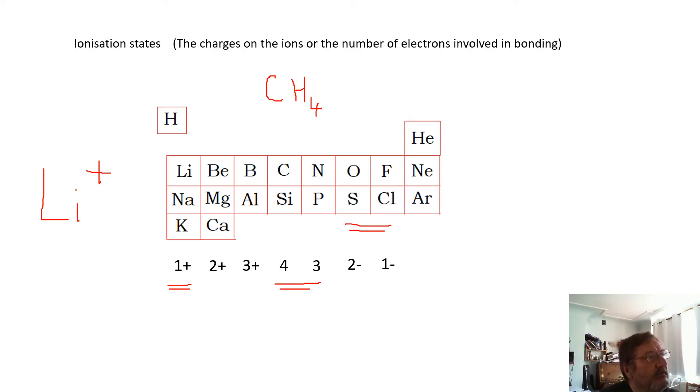If you know the ionization state, you can figure out the formula for the compound. For example, lithium oxide. Lithium is Li+, oxygen is 2-. So what will the formula for lithium oxide be? Well, you're going to want two lithiums for every oxygen, because the lithiums lose one electron, the oxygens want to gain two. So the formula for lithium oxide is Li2O.